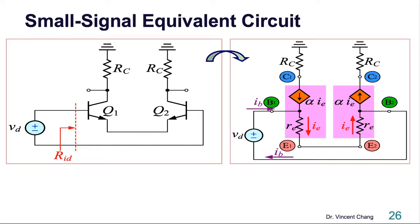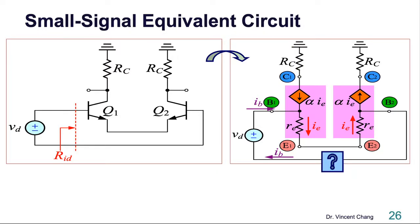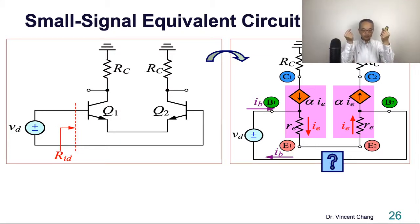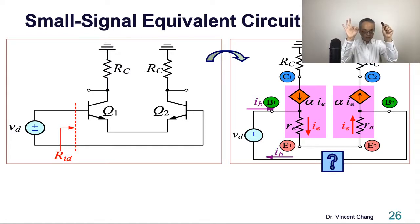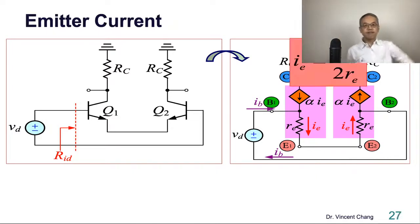The two methods of analysis reconcile each other. The same phase, the same IE, the same model. So what is IE? The total resistance seen by IE is 2RE, and the voltage across the two base terminals is VD. So VD divided by 2RE equals IE. This is the AC emitter current.